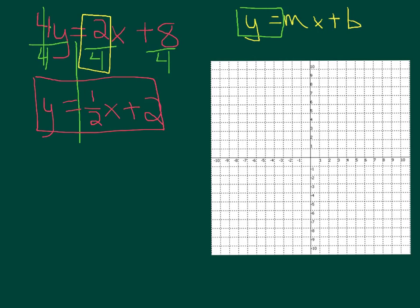I'm going to plot my y-intercept at 2. Then my slope is 1 over 2. So up 1 over 2, up 1 over 2. Then go backwards, down 1, left 2. Connect all your dots and you graph your line.